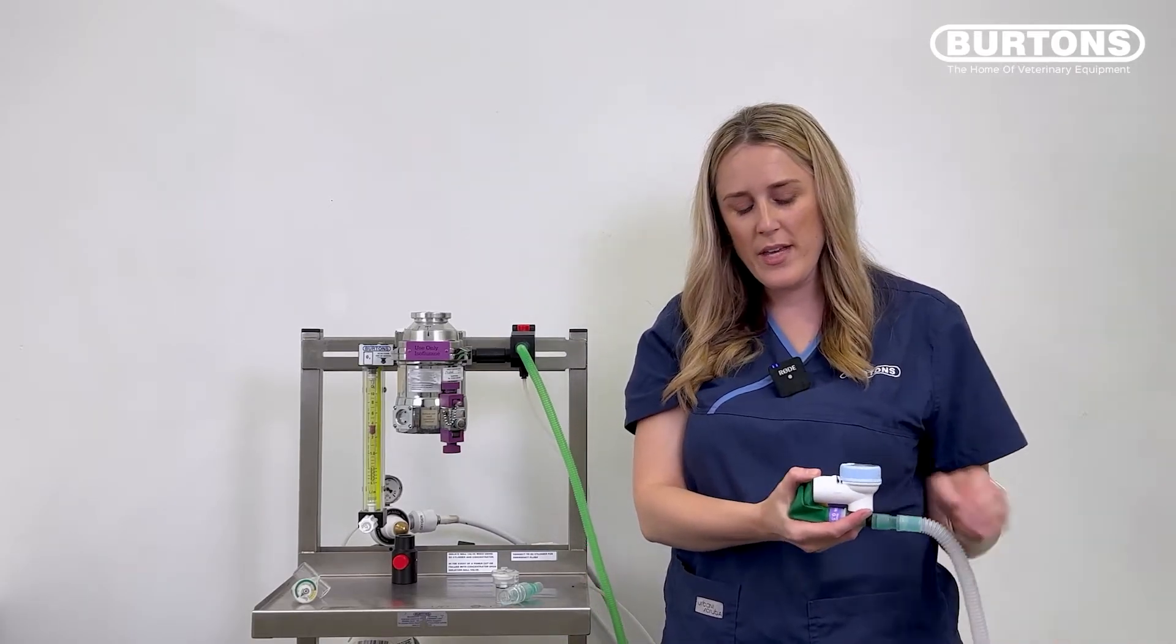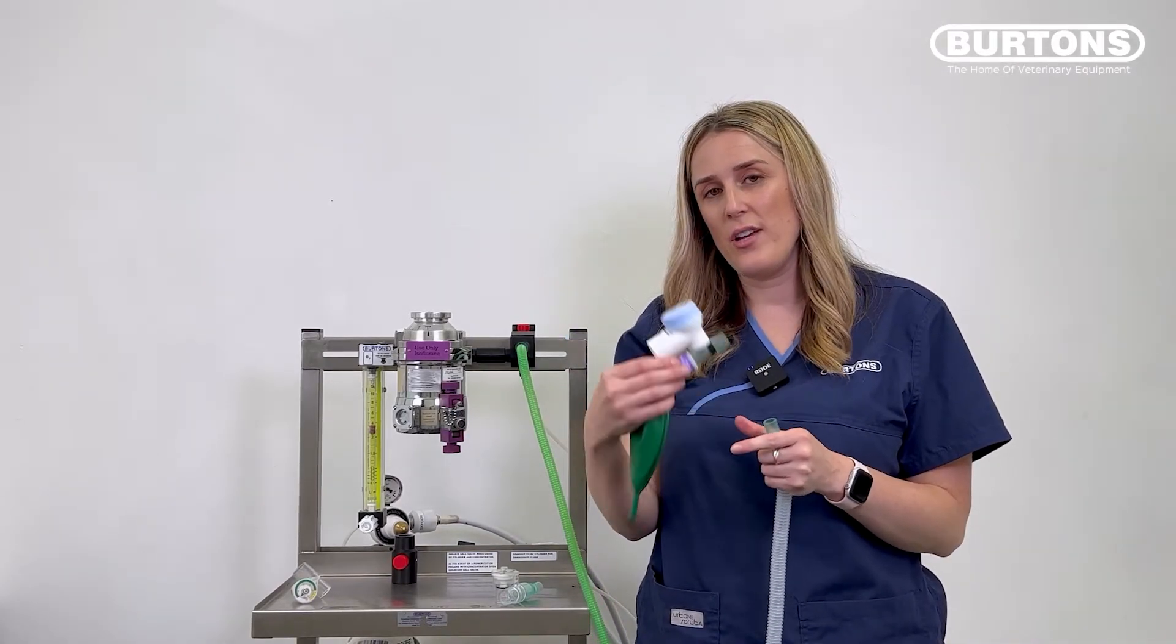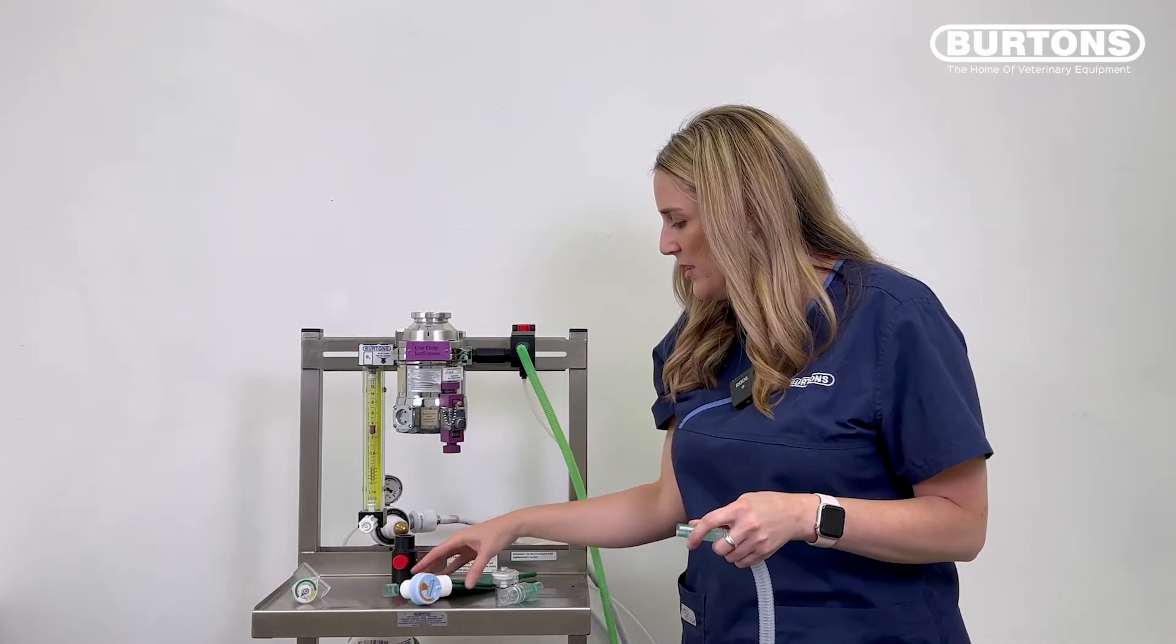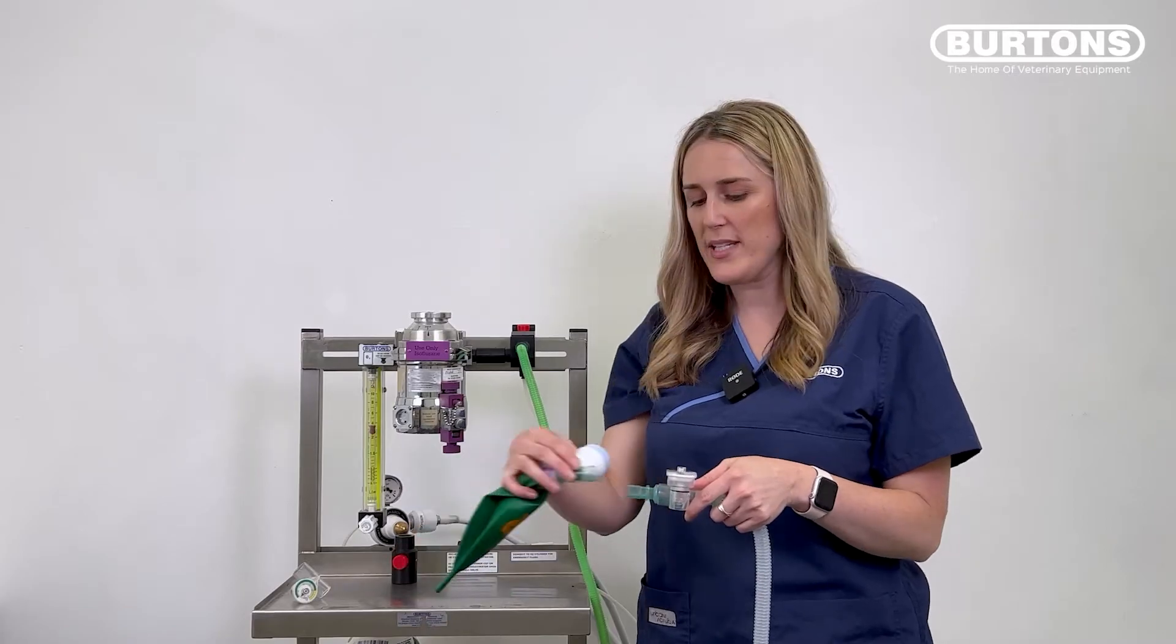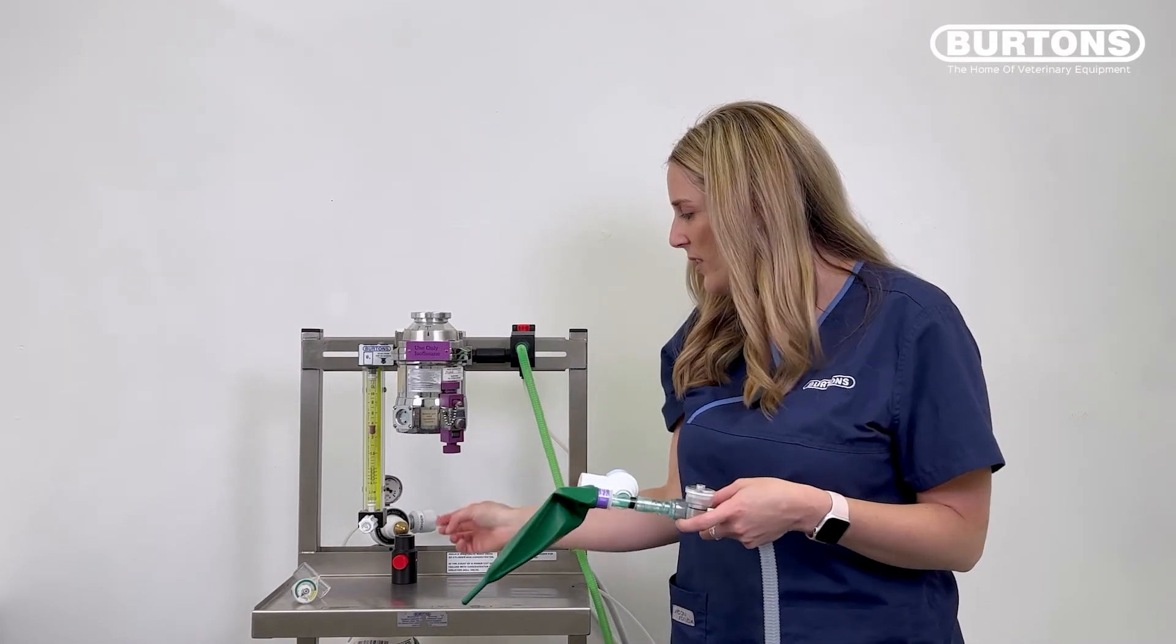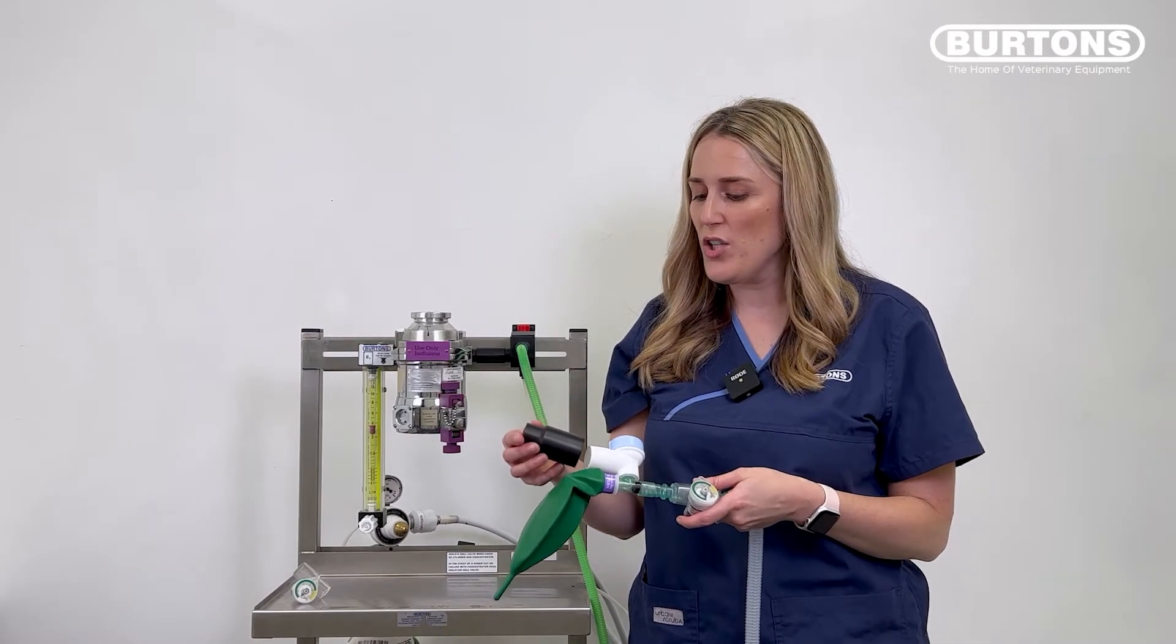Okay, so with our expiratory limb, if we just take off the entire scavenging unit and APL valve, we can then attach our manometer directly and then put it all back together again. We can then also add our IPPV valve button onto our scavenging system.